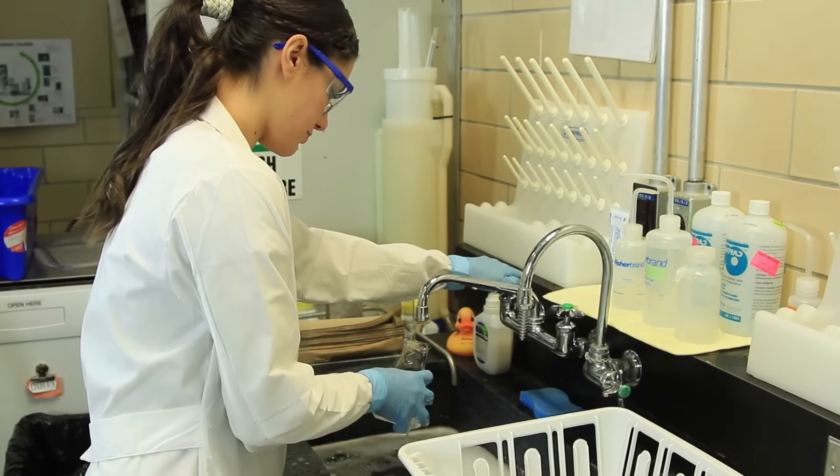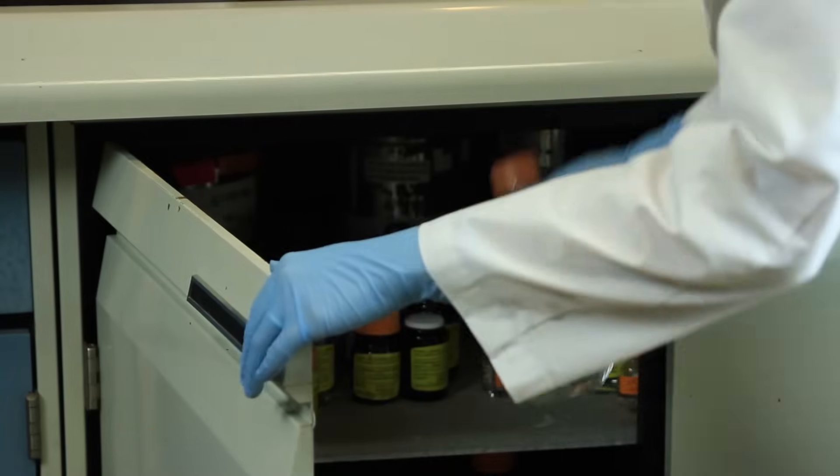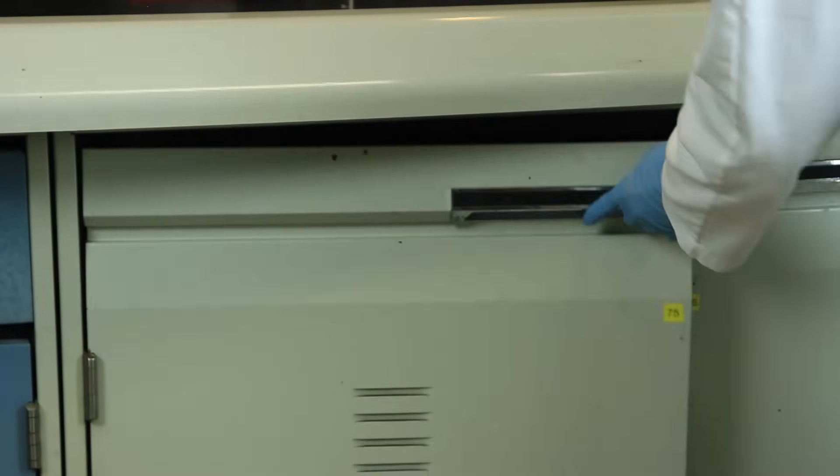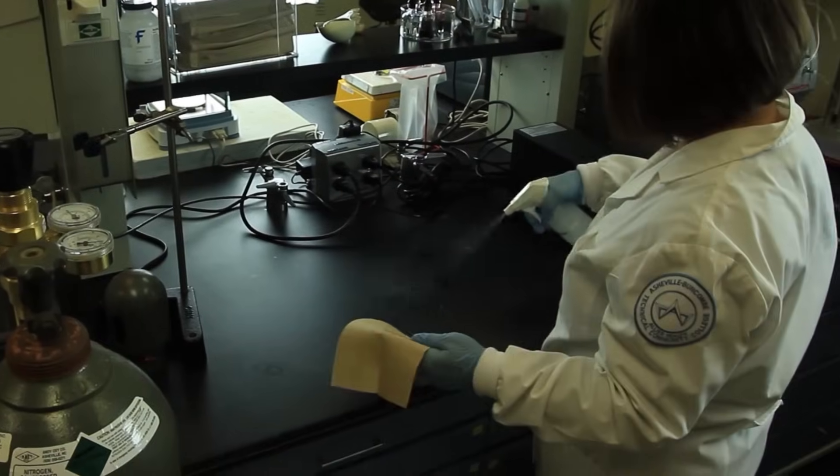After you've finished an experiment, wash and dry glassware, return reagents to the storage area, and clean the workbench surface with ethanol or isopropyl alcohol. If a safety violation occurs or you notice any unsafe condition in the lab, report it immediately to your supervisor.